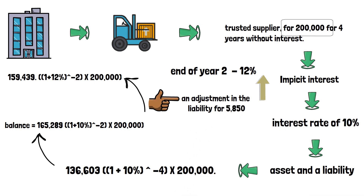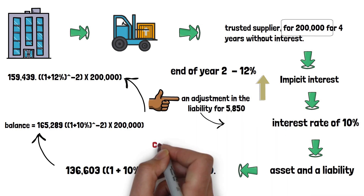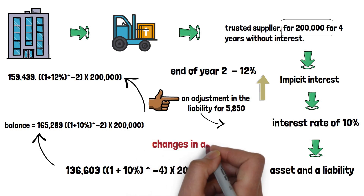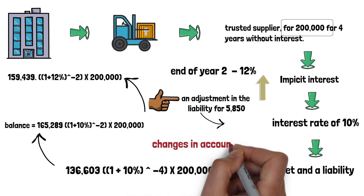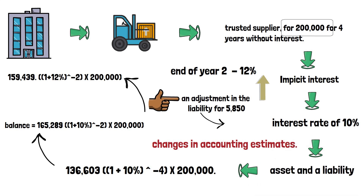As we can see in all the analyzed examples, all the changes are a consequence of new information that emerged — information that the entity did not have at the time of making the first estimate. I hope that with this explanation you have been able to understand the issue of changes in accounting estimates. You can leave a comment if you want additional information related to this topic.